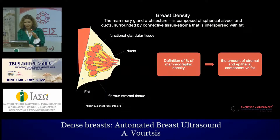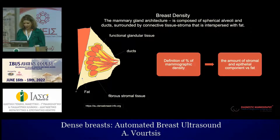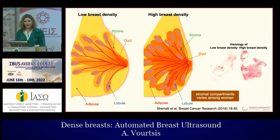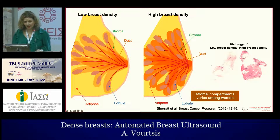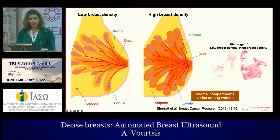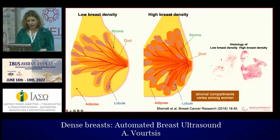What is breast density? There is a lot of conversation about breast density. It is the percentage of mammographic density — the amount of stroma and epithelial component versus fat in the breast. Every woman does not have the same component of epithelial and stroma. You can see here on the left the low breast density compared to the right side, which is high breast density.